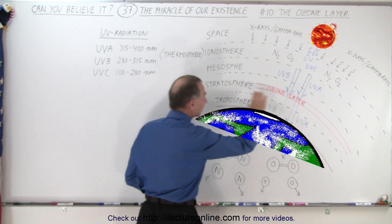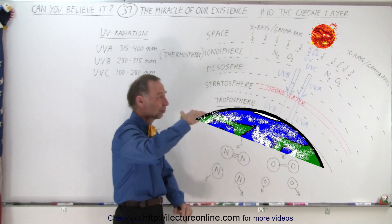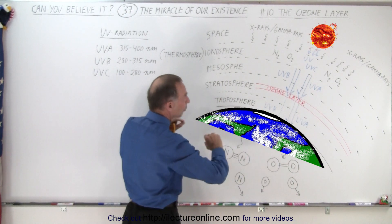We have the troposphere, which is a layer that's about 6 to 10 miles up from the surface, where we live, where all the weather occurs.